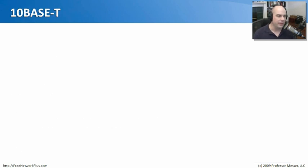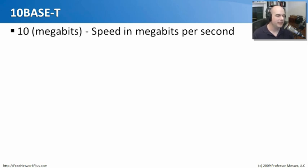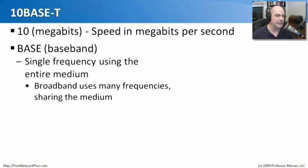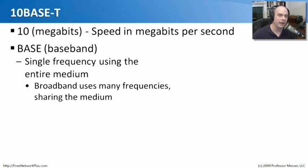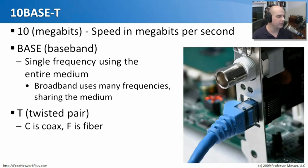Let's go back to 10Base-T and break down what this name stands for. '10' stands for the bandwidth — 10 megabits per second, which is always the speed indicated by that first number. 'Base' is short for baseband: a baseband network uses a single frequency across the entire medium. Whenever it sends traffic, it's always on that frequency, and nothing else uses the medium — no other signals or frequencies, only this particular topology.